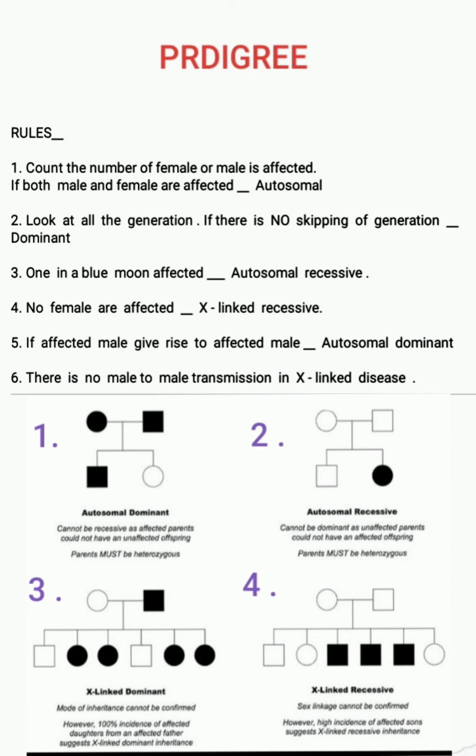Image three: there is no male-to-male transmission but females are affected, so following rule six it is X-linked dominant. Image four: no females are affected, only males are affected. Following rule number four, since no female is affected, it is X-linked recessive.